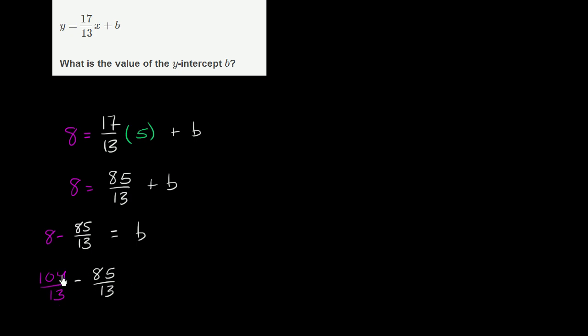Is that right? Yeah, if this is 105, then it would be 20 over 13. So this is 19 over 13. So it's equal to 19 over 13, which is equal to b.